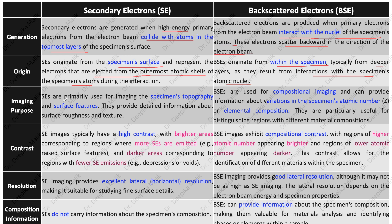Secondary electrons are primarily used for imaging the specimen's topography and surface features, providing detailed information about surface roughness and texture. Backscattered electrons are used for compositional imaging, providing information about variations in the specimen's atomic number or elemental composition, and are particularly useful for distinguishing regions with different material compositions.